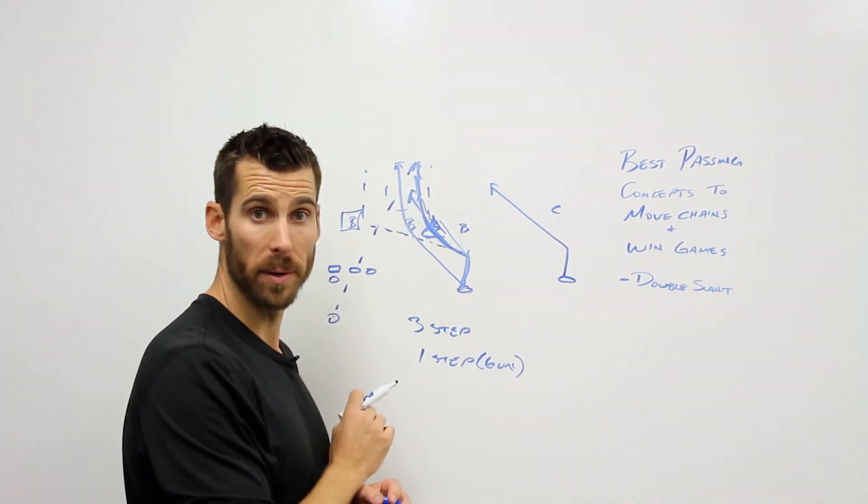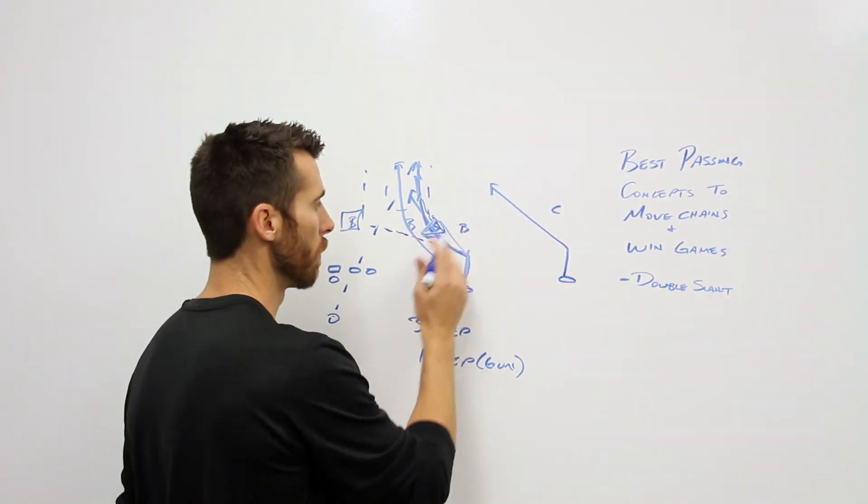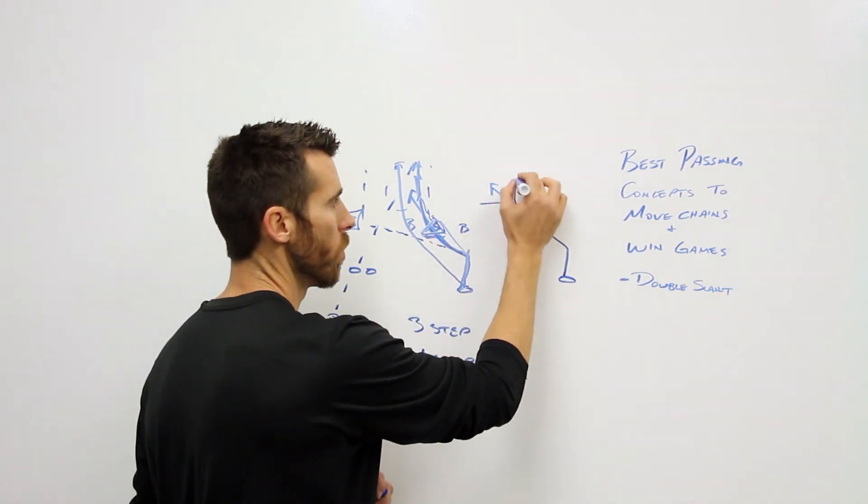And if he's really far inside, we're probably not going to throw it. But we are going to hold him. We're going to bait him and bring him in and give us the throw we want right there.